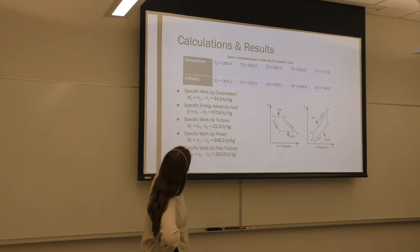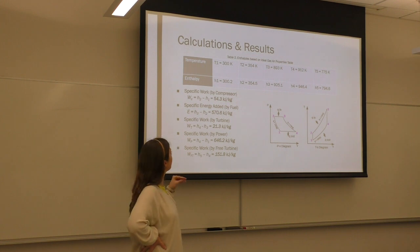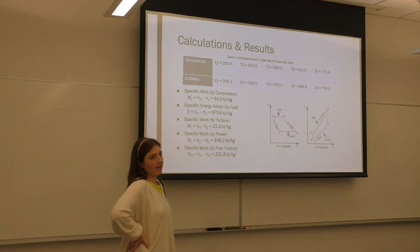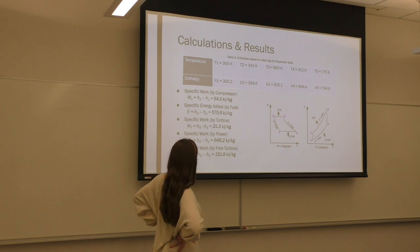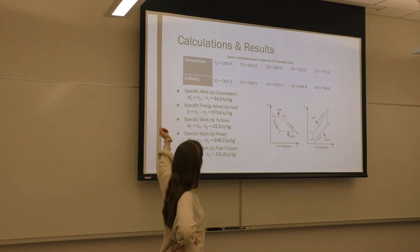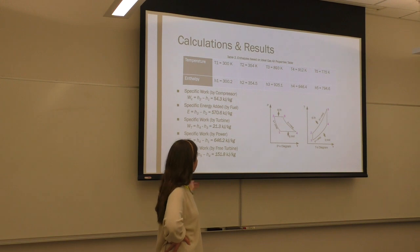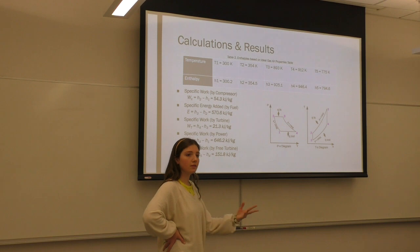And then I calculated enthalpy using the thermo, like air ideal gas tables. And I had to convert the temperatures to Kelvin to do so. And I don't know, I haven't interpolated in a while. And it was, it was fun. And I'm being completely serious. I missed it. And then using those enthalpies, I found the work done by the compressor. And then the specific energy added by the fuel flow. The specific work done by the turbine power. And then by the second turbine.